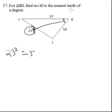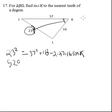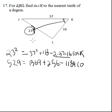23 squared equals 37 squared plus 16 squared minus 2 times 37 times 16 times cosine of K. Let's simplify this a little bit. 23 squared is 529 and 37 squared is 1,369 plus 16 squared which becomes 256 minus 2 times 37 times 16. And we can combine 1,369 and 256 to get 1,625 here.